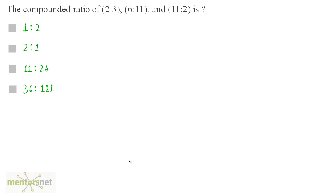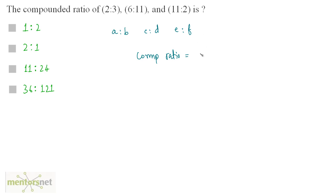The compounded ratio of 2 is to 3, 6 is to 11, and 11 is to 2 is? If you have three ratios — A is to B, C is to D, and E is to F — the compounded ratio equals the ratio of the product of the first terms to the product of the second terms. So this is A, C, E is to B, D, F.